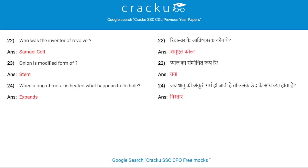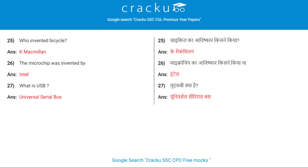When a ring of metal is heated, what happens to its hole? It expands. Who invented the bicycle? K. Macmillan. The microchip was invented by Intel.